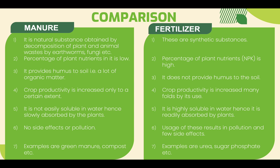Manure is not easily soluble in water and hence is slowly absorbed by plants, whereas fertilizers are highly soluble in water. Manure does not cause pollution side effects, but fertilizers result in pollution and a few side effects. Examples of manure are green manure, compost, etc. Examples of fertilizers are urea, superphosphate, etc.